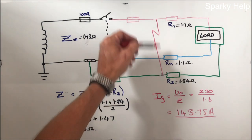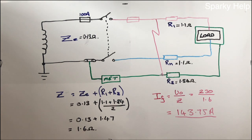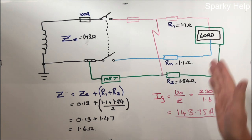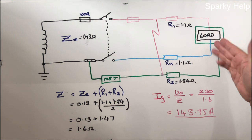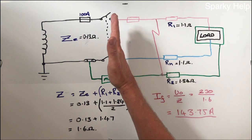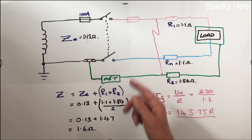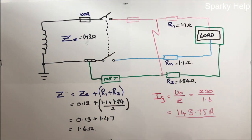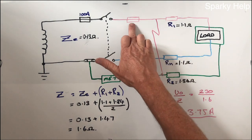So the fault current that would flow in this location would be 143.75 amps. What you probably realise then is that, obviously the reason we do ZS is because it's the worst case scenario of that circuit, it's the lowest fault current in the circuit. Any fault that is closer to the origin of the supply, the fault current is going to go up, and therefore quicker disconnection of that protective device.